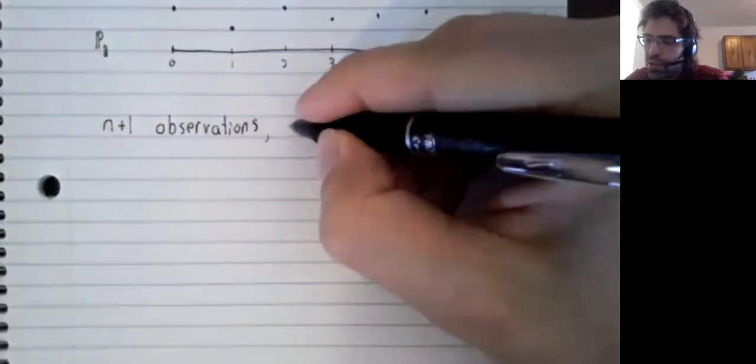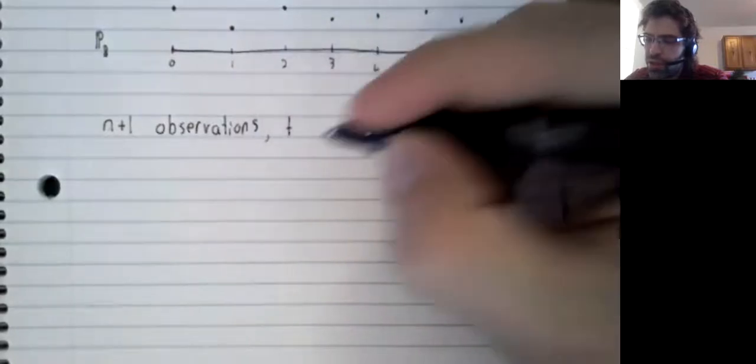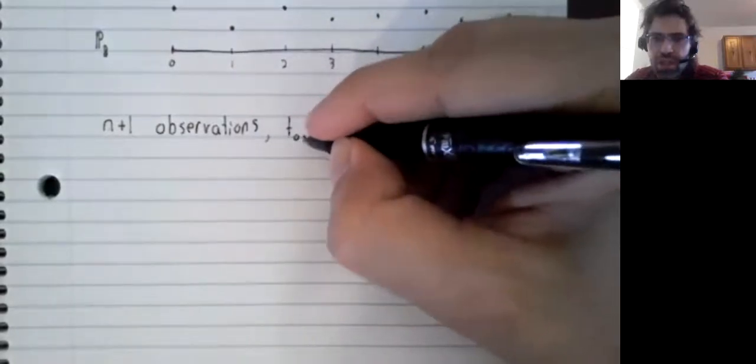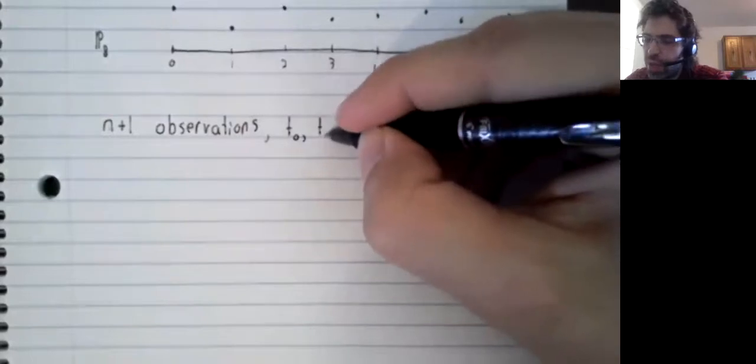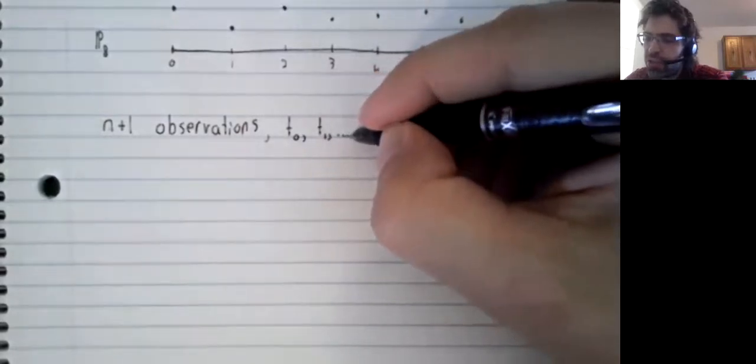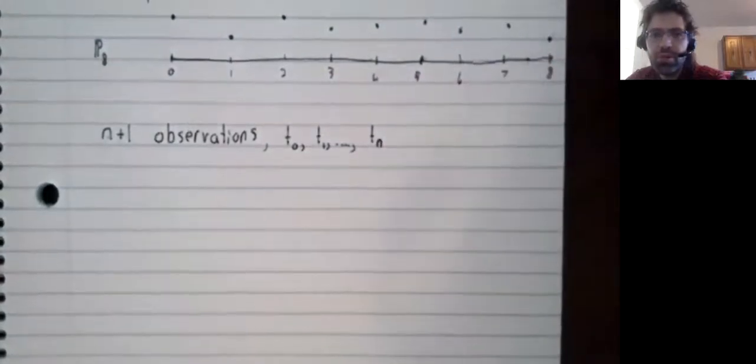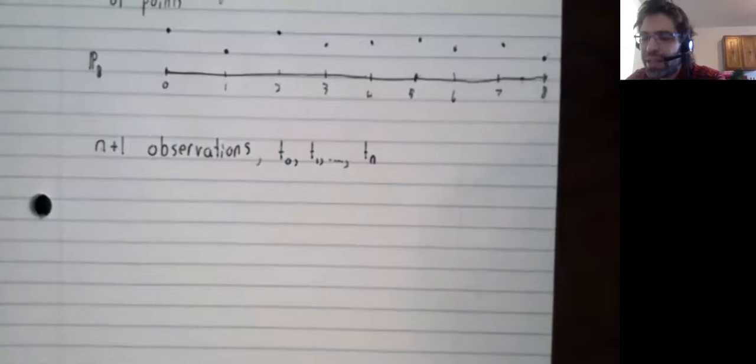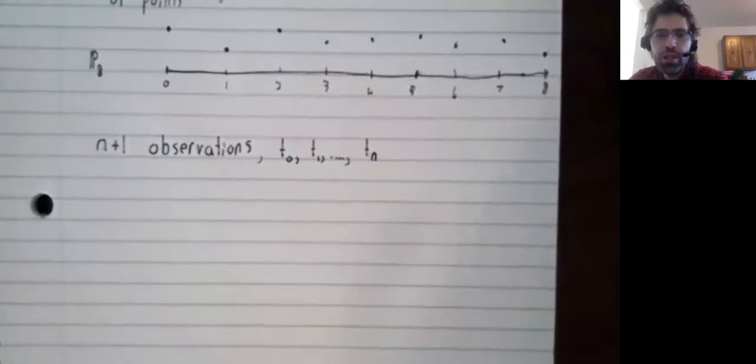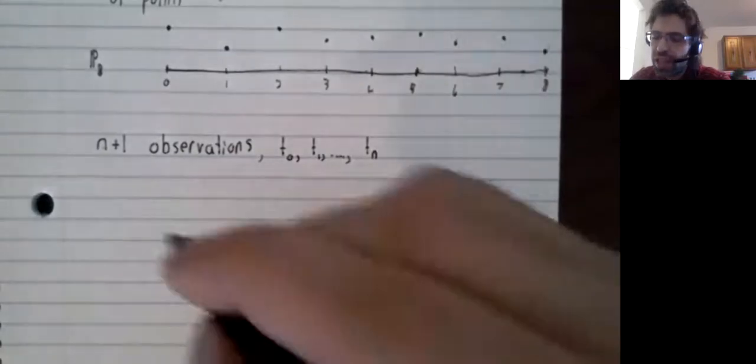So let's call these observations t zero. Or rather, I guess I should say, let's call the times these observations are taken t zero, t one, up to t n.